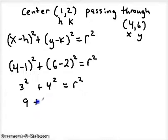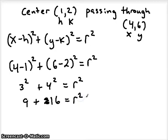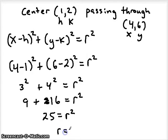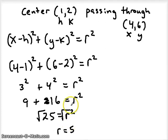3 squared is 9, and 4 squared is 16, giving us R squared. So 9 plus 16 is 25 — 25 is the radius squared. In order to just get the radius we need to square root both sides, and we find that our radius is 5. So if your job was to solve for the radius, you would now know the center of the circle and the radius, and you could graph it if needed.